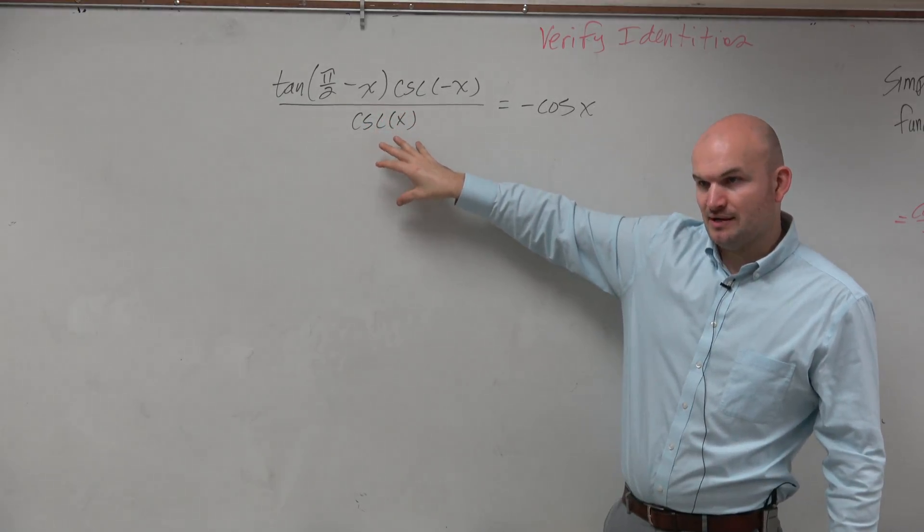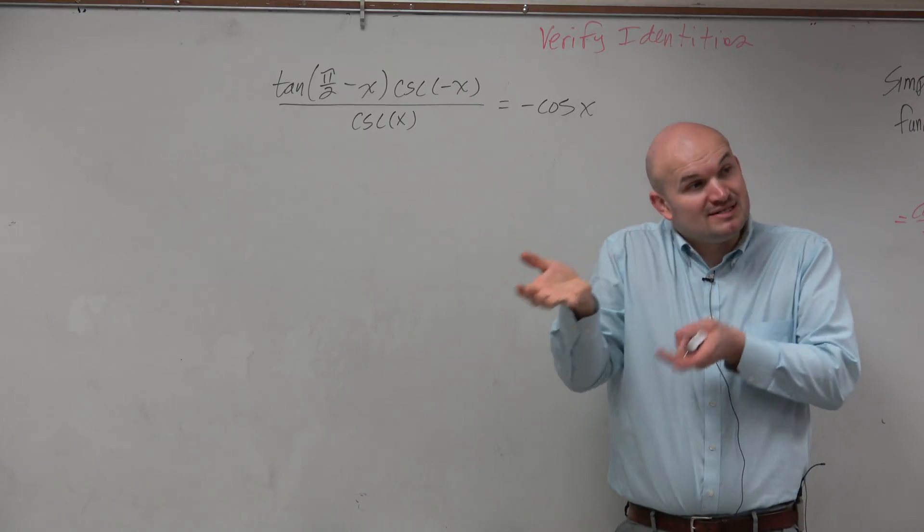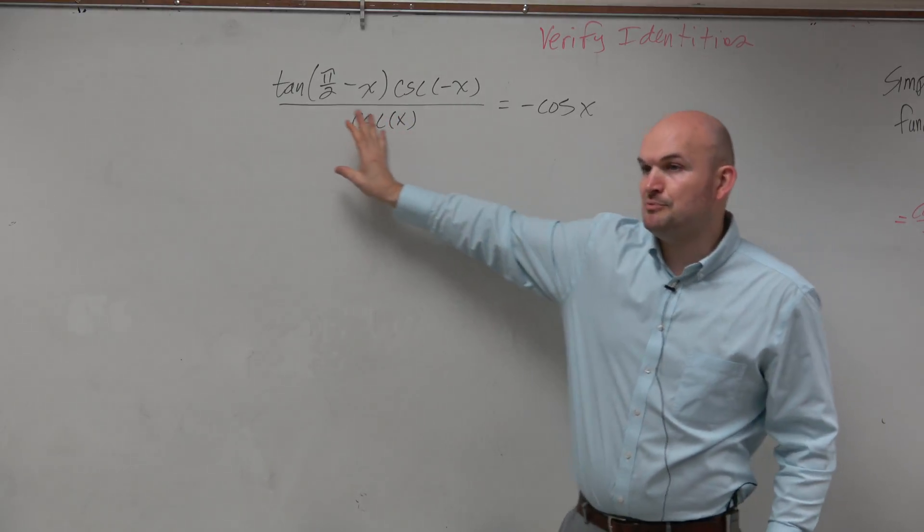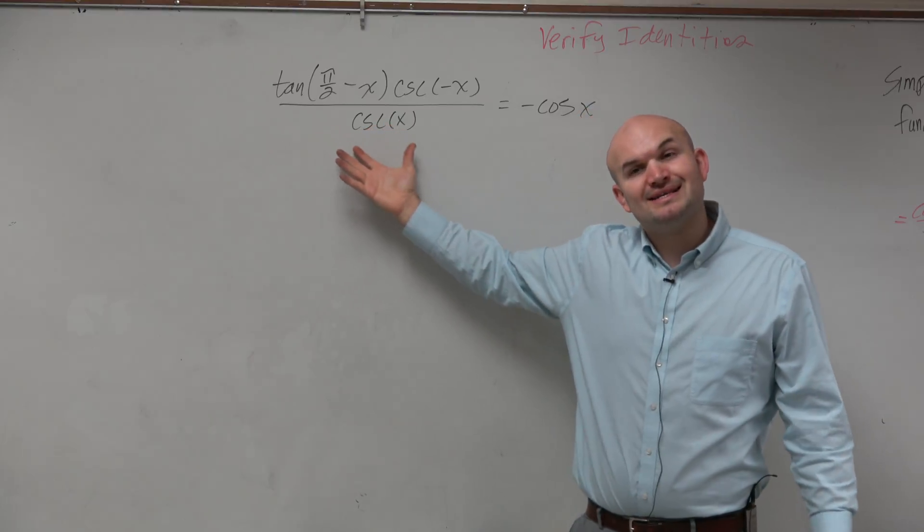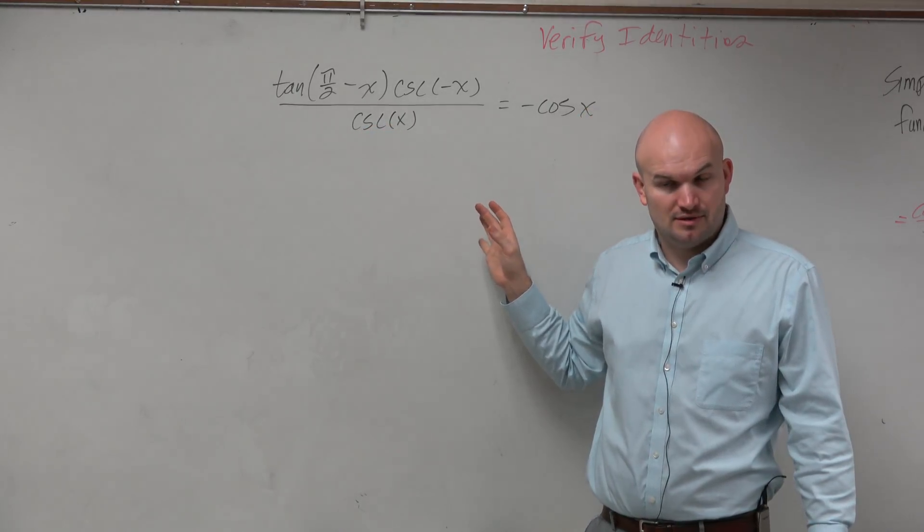That looks like a lot of things are going on there. And this is just negative cosine of x hanging out over here. So if we want one side equal to the other side, it would make sense to pick a side and then try to simplify that side so it looks like the other side. Does that make sense? OK.